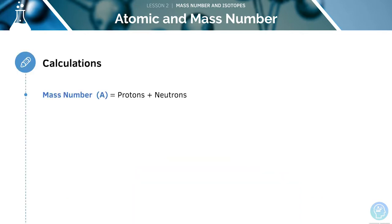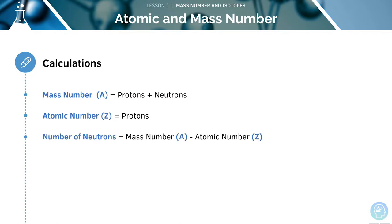We can perform calculations to determine the number of subatomic particles. The mass number equals the number of protons plus the number of neutrons. The atomic number is simply the number of protons an element contains. The number of neutrons is the mass number minus the atomic number, since the mass number includes protons and neutrons while the atomic number is just protons.